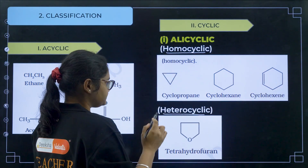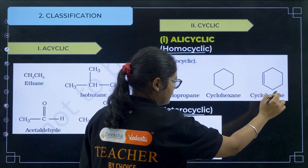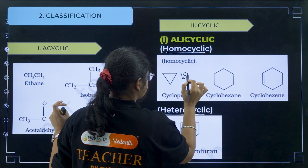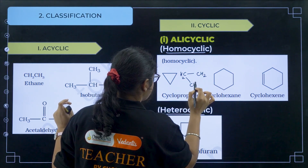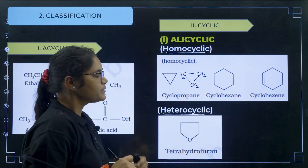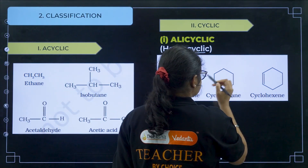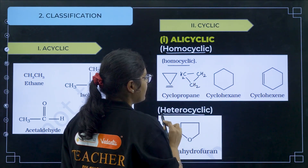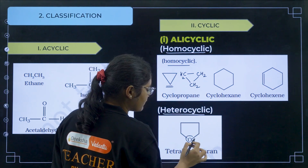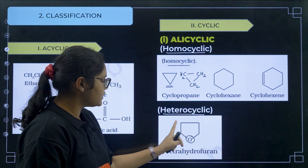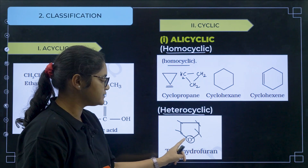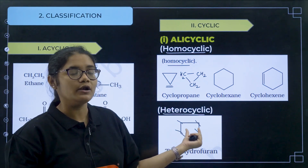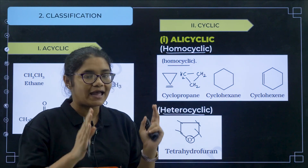Homocyclic means if all the atoms are carbon, then it is called homocyclic. In bond line formula, this is actually CH2-CH2-CH2. Similarly, here it is CH2-CH2-CH2. These types of structures where all the bonds are between carbon are called homocyclic. Now heterocyclic means you have one extra atom — these all are carbon, but this one is oxygen. If any hetero atom is present in the ring, then it is called heterocyclic. But it is still a part of alicyclic.